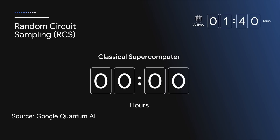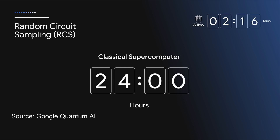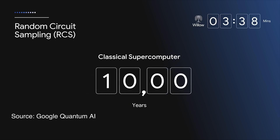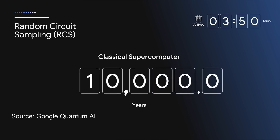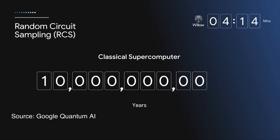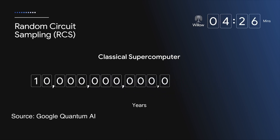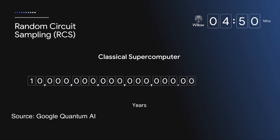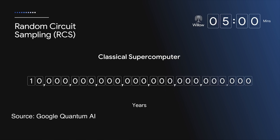standard benchmark computation in under five minutes that would take one of today's fastest supercomputers 10 to the power of 70 million years — that is 10 to the power of 25 years — but Google's quantum chip has solved it in under five minutes.